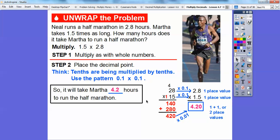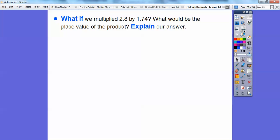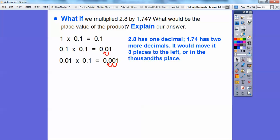So 4.2 is the same as 4.20. So when you multiply decimals, I just like to multiply. For example, what if we multiply 2.8 times 1.74? What would the place value of the product be? Well, this is two decimals over, this is one more. So it's going to be three decimals over. When we multiplied two decimals times a one decimal, it took us three over.